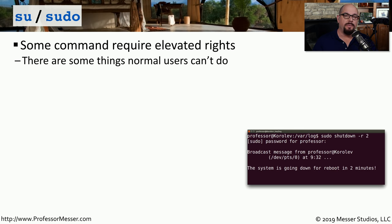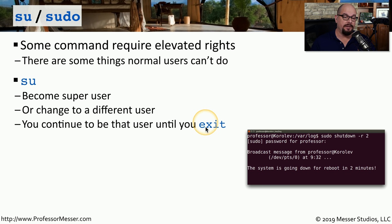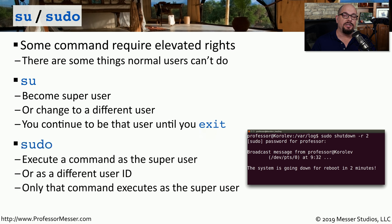Up to this point, we've been using commands that can be run by anybody on the Linux system. But some commands need elevated rights for system administrators. The su command changes the shell to be that of a super user — similar to the administrator account in Windows — and you can use it to change to another user's permissions as well. Without a username, it assumes you want the root user shell. You continue with elevated rights until you exit that shell. If you just need to run a single command as root, use sudo, which grants elevated rights for that command only and then returns you to normal permissions.